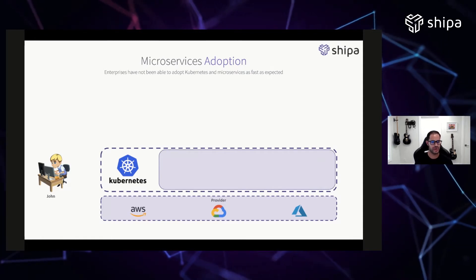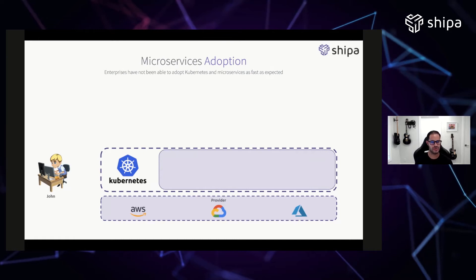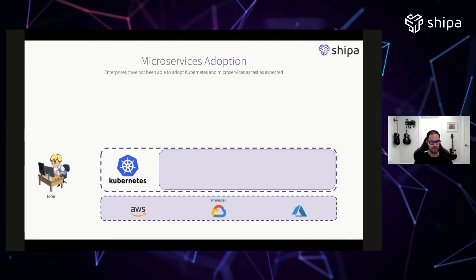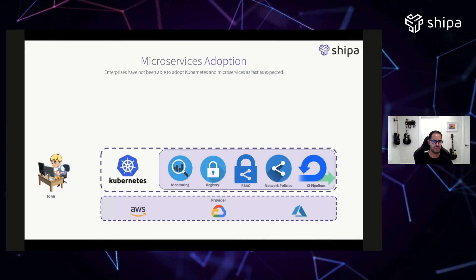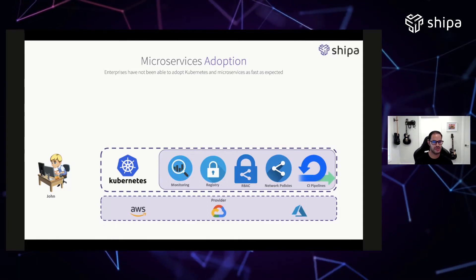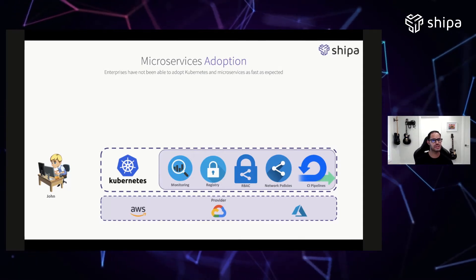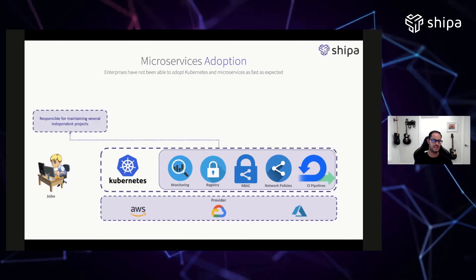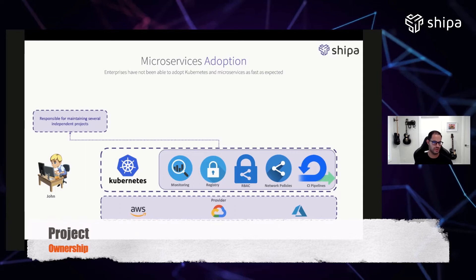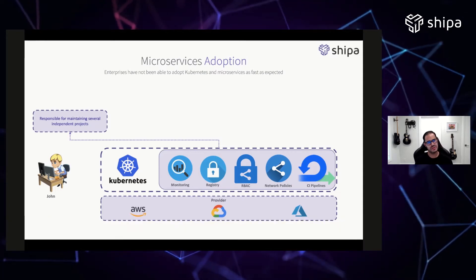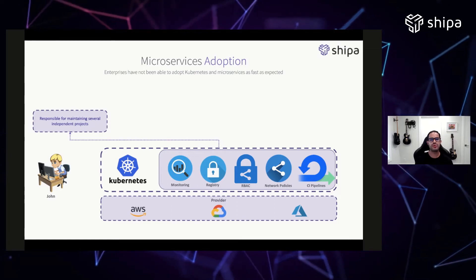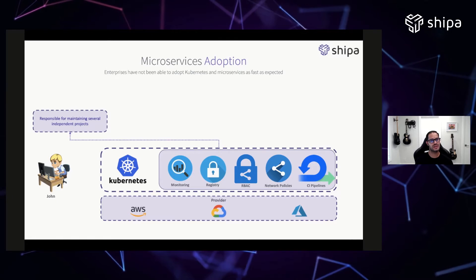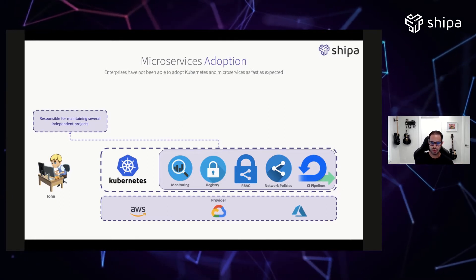But he realizes that for Brian and his team to be able to deploy the apps and really consume that infrastructure, Kubernetes by itself is definitely not enough. So John starts building the required components — he brings in monitoring, RBAC configuration, network policies, and he starts looking at how to integrate this new platform into existing pipelines. As John spends time building this, he realizes he is now responsible for maintaining several independent projects — some open source, some commercial — trying to glue it all together, supporting and getting calls and support tickets.